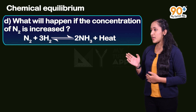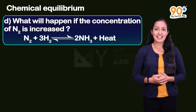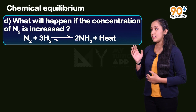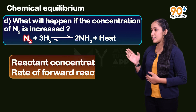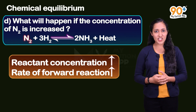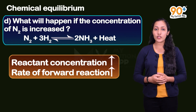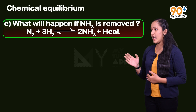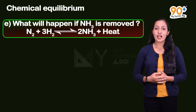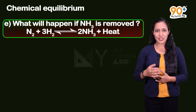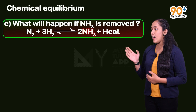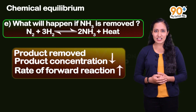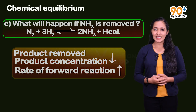Next question: what will happen if the concentration of N2 is increased? In this reaction, nitrogen is the reactant. When the concentration of a reactant is increased, the forward reaction rate increases. As a result, more product, that is ammonia, is formed. Next question: what will happen if NH3 is removed? Ammonia is the product. When the product is removed, the product concentration decreases. As a result, the forward reaction rate increases.